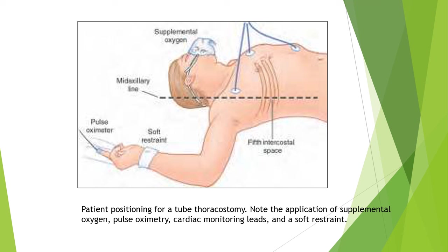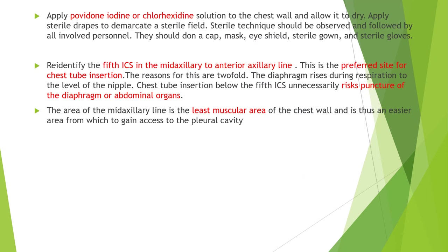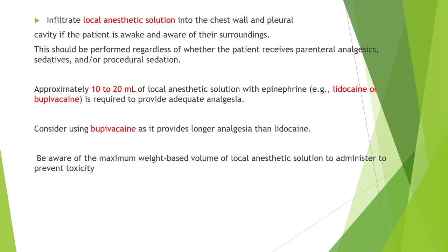Apply povidone-iodine or correction solution to the chest wall and allow it to dry. Place sterile drapes to create a sterile field, then re-identify the fifth intercostal space in the mid-axillary to anterior axillary line — this is the preferred site for chest tube insertion. The diaphragm rises during respiration to the level of the nipple, so chest tube insertion below the fifth intercostal space risks injuring the diaphragm and abdominal organs. The mid-axillary line is the least muscular area of the chest wall and provides easier access to the pleural cavity. Infiltrate local anesthetic solution into the chest wall.